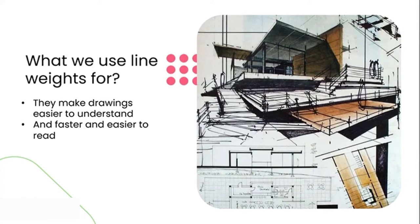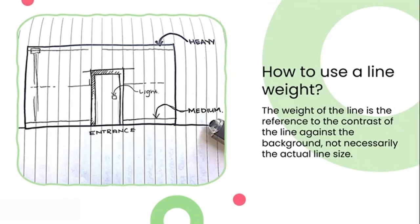The weight of a line refers to the contrast of the line against your background, not necessarily the actual thickness. Line weights can be shown through different line intensities, thicknesses, and sometimes even patterns — such as dashes, dots, or hash patterns. We don't only use line weights when drawing by hand; all of our computer-aided software have built-in systems for generating and managing line weights in their drawings. We will get to this in module four.